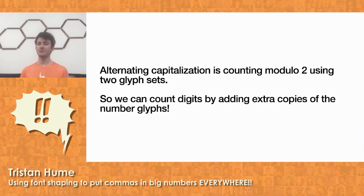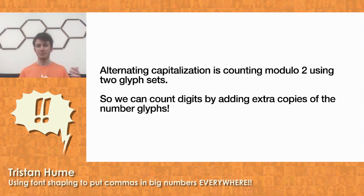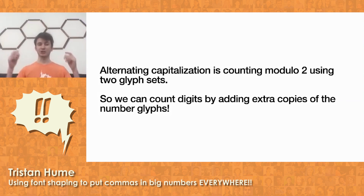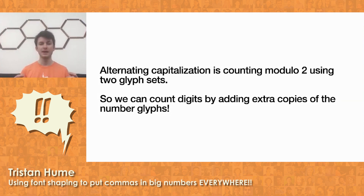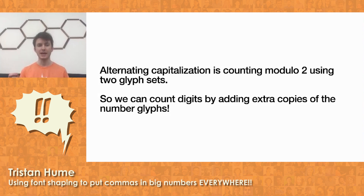This alternating capitalization is kind of like counting modulo 2 from the end of the string by using two different glyph sets. We want to count digits from the end of the number, and we can use a very similar technique with different glyph sets. But we only have one set of number glyphs, so we need to create extra copies of the digit glyphs to keep state — because the only type of state in this substitution is by replacing glyphs. So we need as many glyph sets as we need to count.